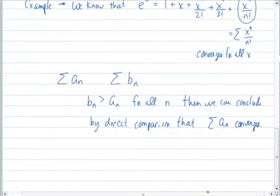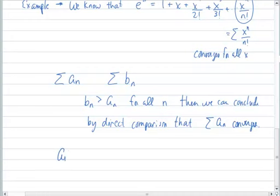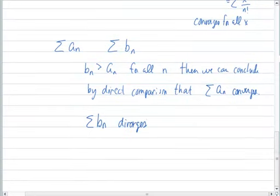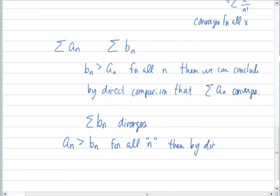And the same thing is true that if, let's say our comparison test, b_n, that this summation diverges, if we can show that a_n is greater than b_n for all terms, then we can conclude by direct comparison that our a_n summation will also diverge.